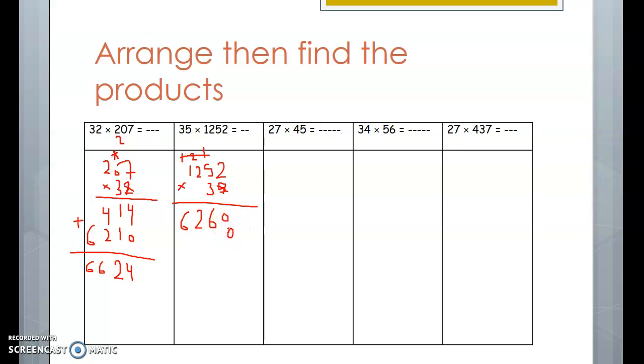We start a new line with 0 because we are multiplying by the tens. 3 times 2, 6. 3 times 5, 15. 5 down and 1 up. 3 times 2, 6. And 1, 7. 3 times 1, 3.